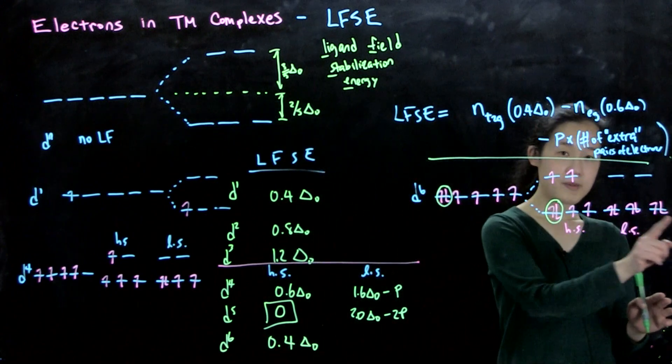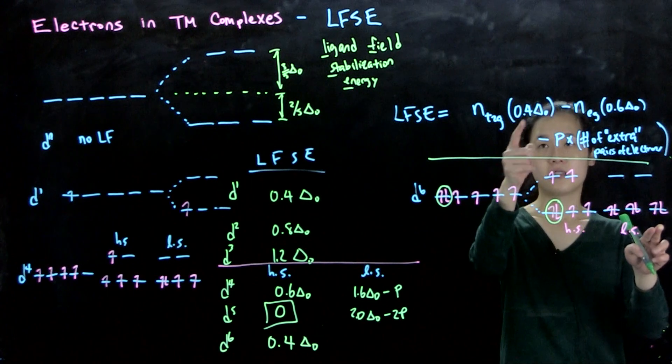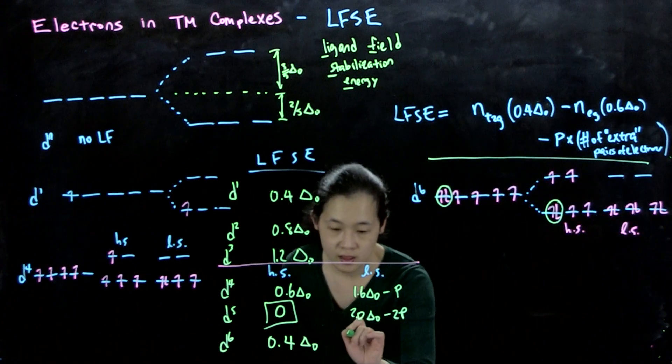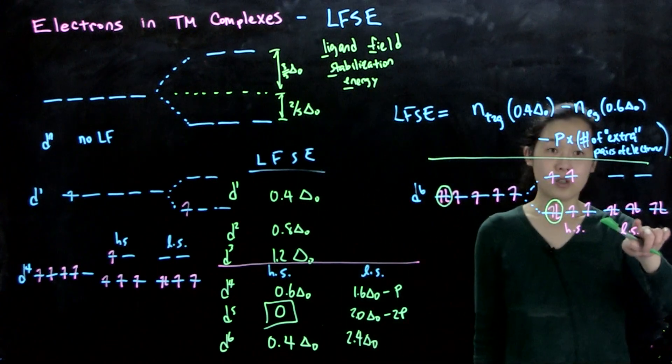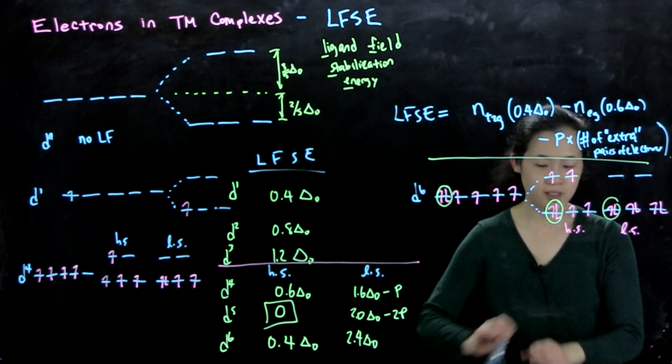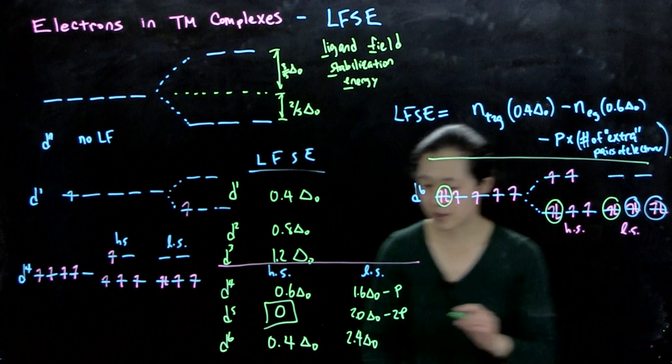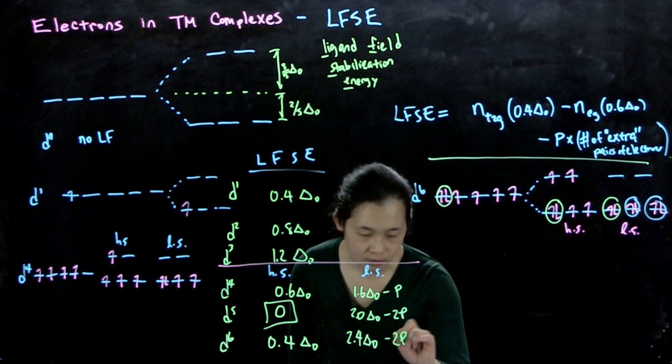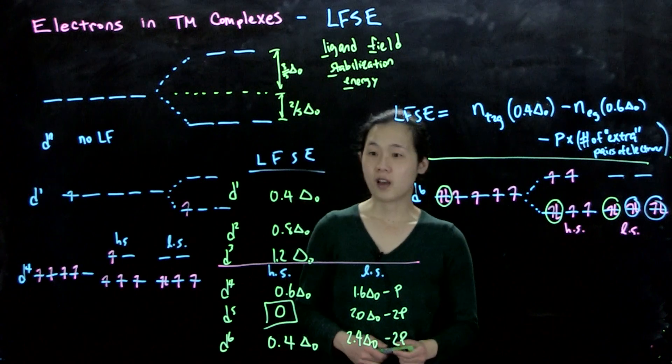In comparison to our low spin configuration, we now have six electrons in the T2G set. So that's 2.4 delta O. And here we have two extra pairs. We already had this one, but these two are extra. So therefore, we subtract 2P. So that's how we get our LFSEs.